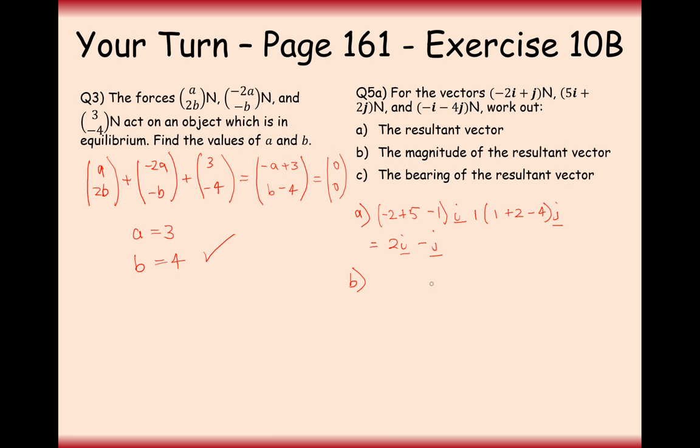Work out the magnitude of the vector. Well, if I was to draw out this vector, it would be 2 to the right and 1 down. So what is the distance straight from this point here to this point here? That's going to be 2 and a 1, so that's going to be the square root of 5 newtons, from a bit of Pythagoras' theorem. 2 squared plus 1 squared square rooted.